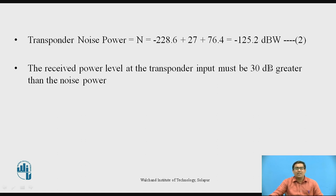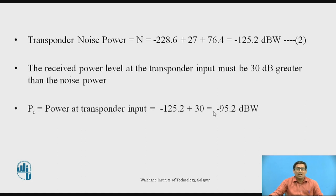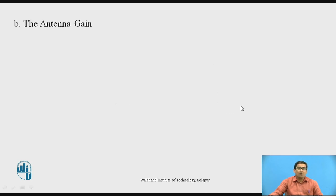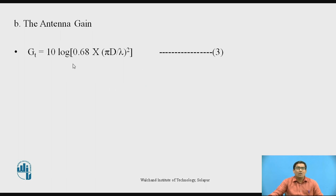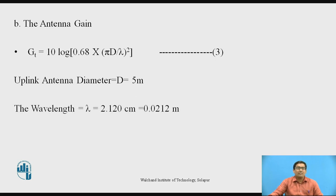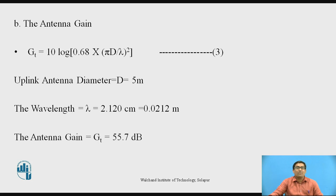Now we want to design the antenna gain. The formula is: Gt = 10 log[0.68 × (πd/λ)²] (equation 3), where d is the uplink antenna diameter = 5 m, and λ = 2.120 cm. Converting centimeters to meters gives λ = 0.0212 m. Putting this value into equation 3, we get antenna gain = 55.7 dB.